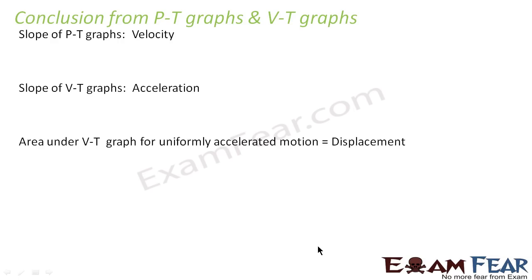Slope of a position time graph gives velocity. Slope of a velocity time graph gives acceleration. And area under a velocity time graph for uniformly accelerated motion gives displacement. So these are the three things in short which we studied till now.